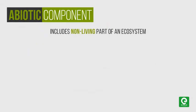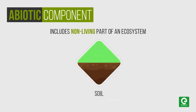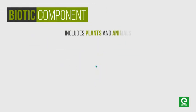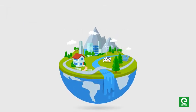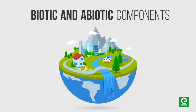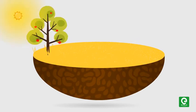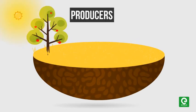The two main components of an ecosystem are biotic and abiotic. The abiotic component includes the non-living part of an ecosystem such as temperature, water, light, and soil, whereas the biotic components include plants and animals. The interaction of biotic and abiotic components results in a physical structure that is characteristic for each type of ecosystem.